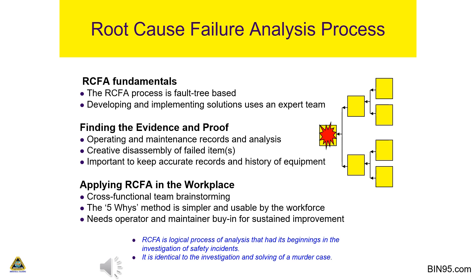All non-contributing causes are removed and contributing causes are retained. A fault tree is constructed starting with the final failure and progressively tracing each cause that led to the previous cause. This continues until the trail can be traced back no further. Each result of a cause must clearly flow from its predecessor. If a step is missing between causes, it is added in and evidence is looked for to support its presence.